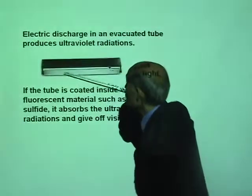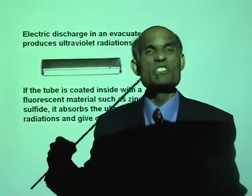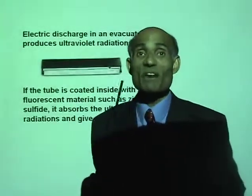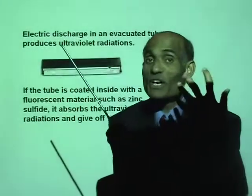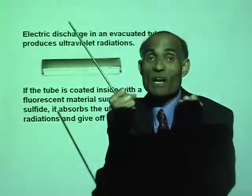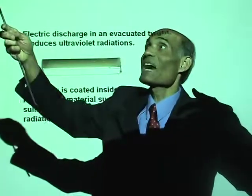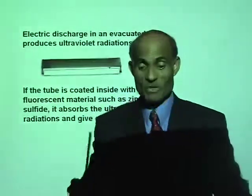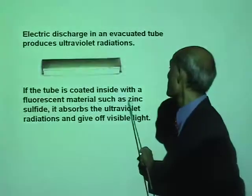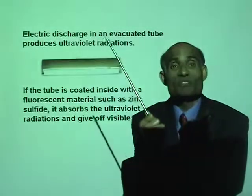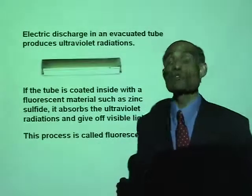The inside of the tube is coated with a material called a fluorescent material, and in most cases it is zinc sulfide. This zinc sulfide has one property: it will absorb the ultraviolet radiations. Ultraviolet radiations you cannot see. But the zinc sulfide will absorb these ultraviolet radiations and give out visible light, and that is the light we see from the fluorescent lamps. This process is what we call fluorescence.